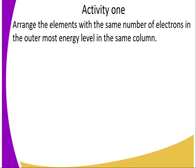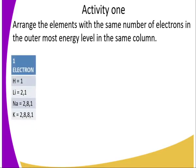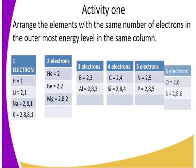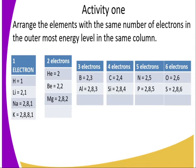To construct a periodic table for the first 20 elements, consider this activity: arrange elements with the same number of electrons in the outermost energy level in the same column. Elements with one electron in the outermost energy level — hydrogen, lithium, sodium, potassium — go in the same column. Those with two electrons go in the second column, then three, four, five, six, and so on.